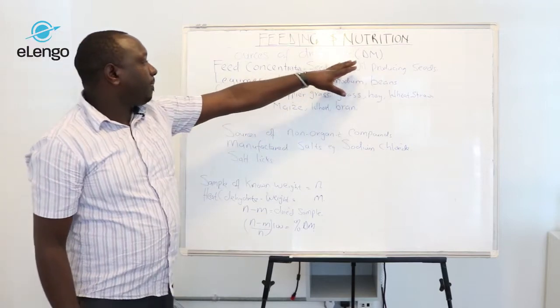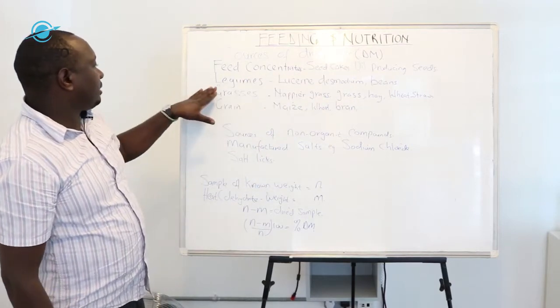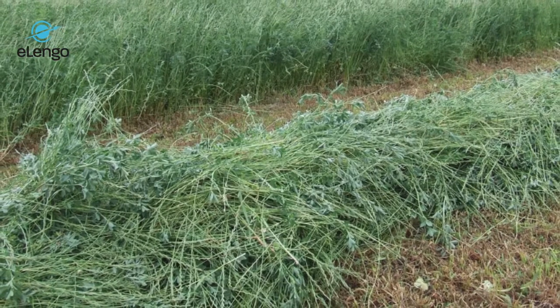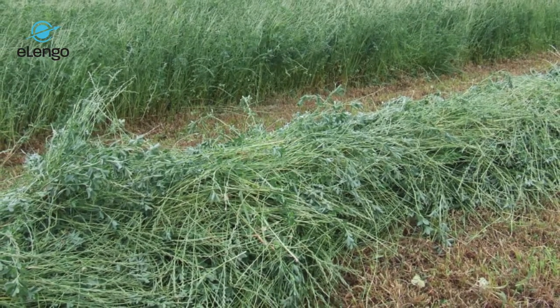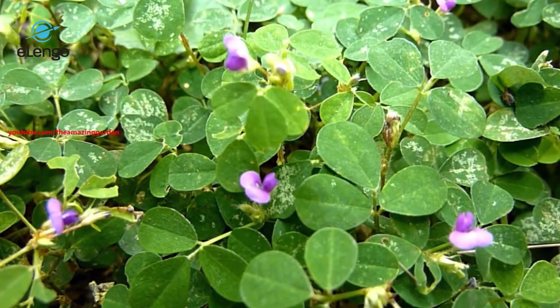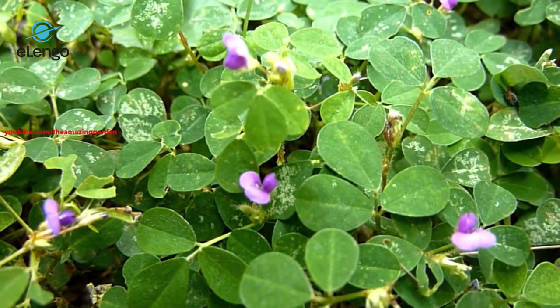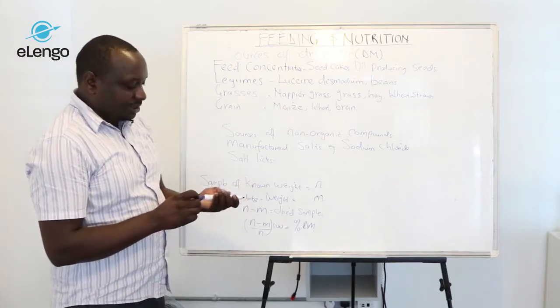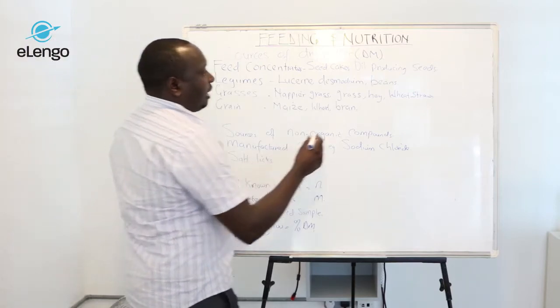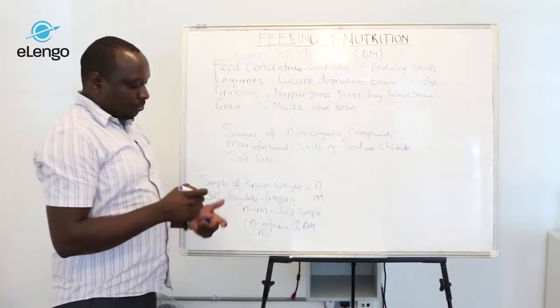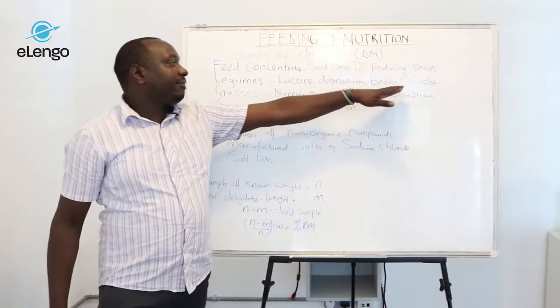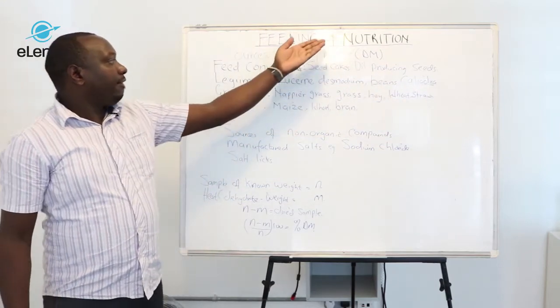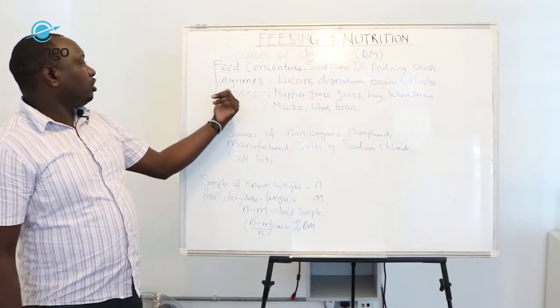We have leguminous fodder, including lusanne, desmodium, and beans. We also have agroforestry crops such as calliandra, which most farmers use as a fence, but the leaves can be used as fodder to feed goats and are rich in proteins.